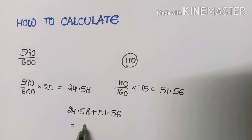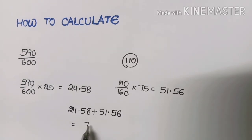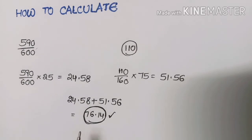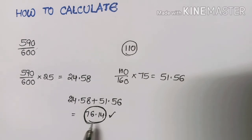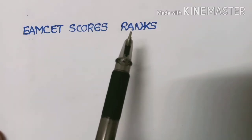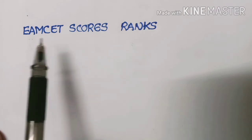Now we add these two values: 24.58 plus 51.56. Therefore, the MSET score obtained by the student is 76.14. This is the procedure to calculate the MSET score. Depending upon the value of the MSET score, the rank will be prepared.